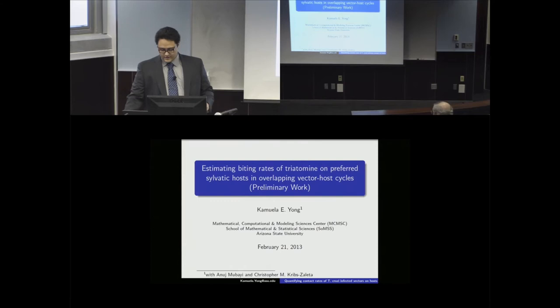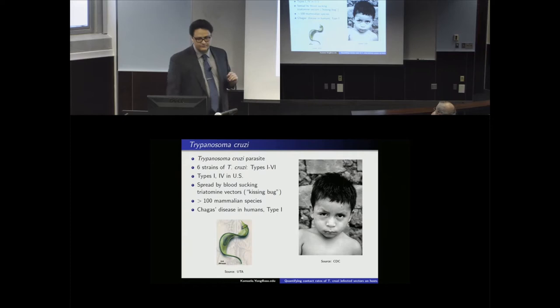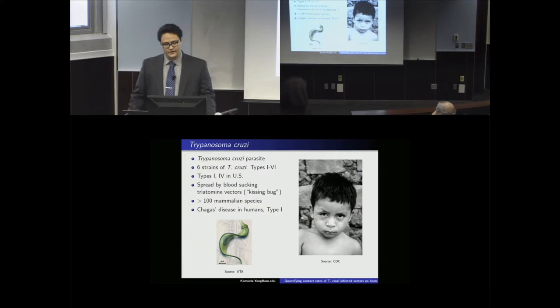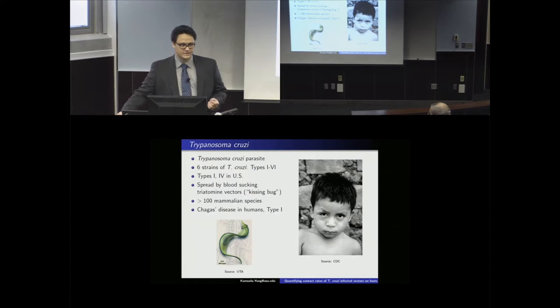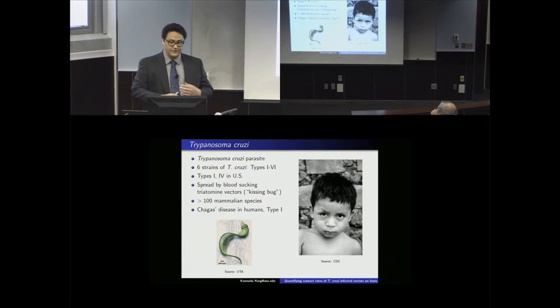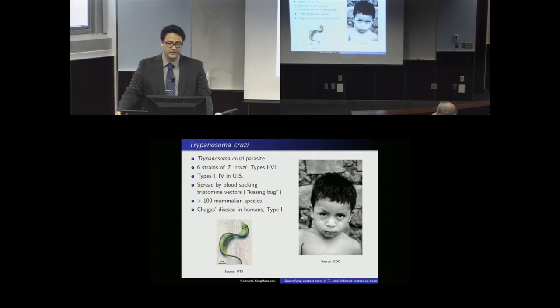This allows me to start a transition from ecology to epidemiology. T. cruzi is a parasite that comes in six different strains; only two strains are in the US — strain one and strain four. T. cruzi is spread by a triatomine vector, which bites its host usually when the host is sleeping. For humans, all that's exposed is our face, so the vector bites our face — sometimes even on the lips.